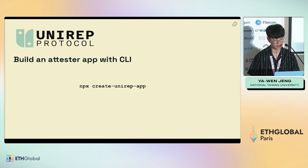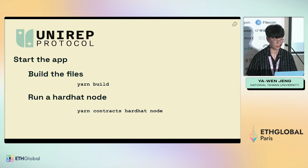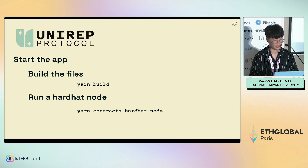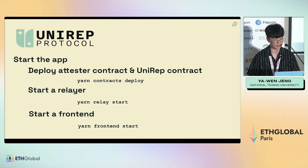You can also build an attester with the CLI more easily. This CLI will provide circuits, contracts, a relayer, and a front end. You can start the app with yarn build using Hardhat node, then deploy your smart contracts, and then start the relayer and front end client.